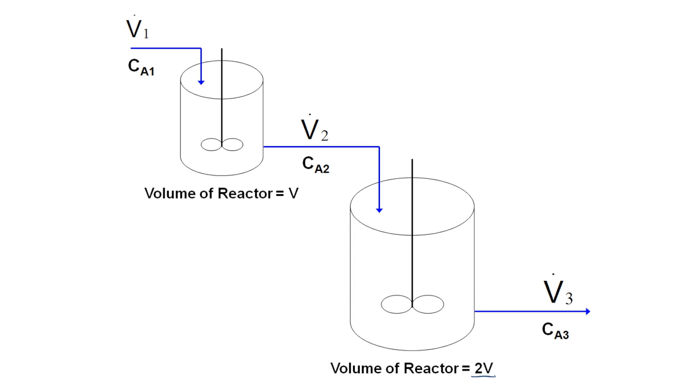We assume as usual that there's no change in the density so the volumetric flow rate coming into the first reactor is the same as going into the second reactor and that is going out, which we'll call V. The overall conversion is 80%. So in this case we can actually draw the system boundary around both reactors because we're talking about the overall conversion.